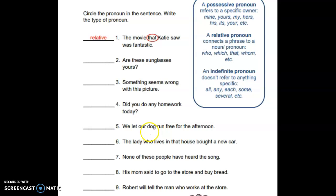Number five: 'We let our dog run free for the afternoon.' Think about this one — it's showing possession with 'our dog.'